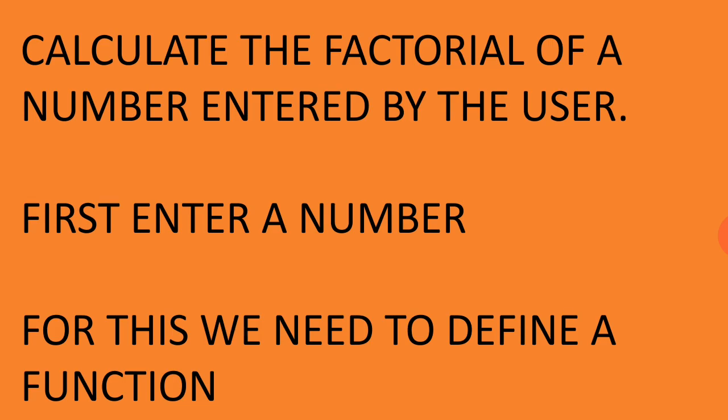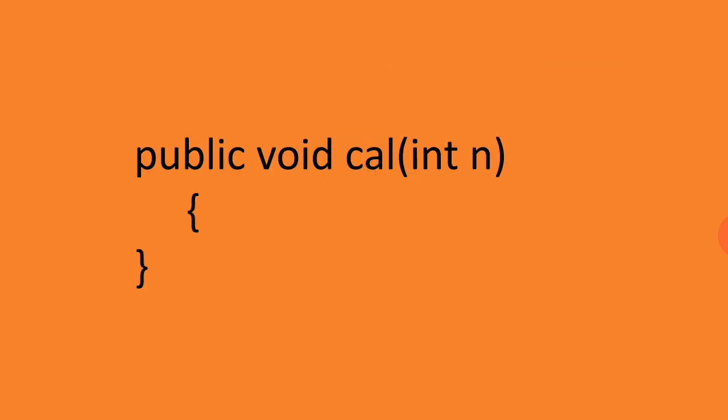For this we need to define a function. We always think about public static void main, so here we have a function where we pick public from there. Return type is void, static is not required. Instead of main function, I'm going to name it as a user-defined function, that is cal.